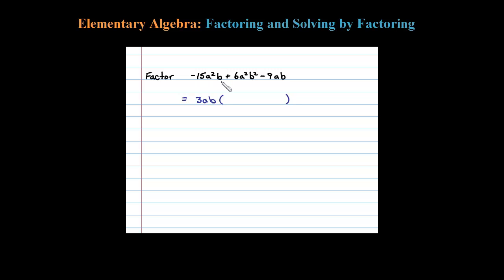Okay, so factoring out 3 out of 15, I'd be left with negative 5a, plus 2ab, and then minus 3. Now you always want to do the mental check to make sure that when you distribute this you get back to where you came from.